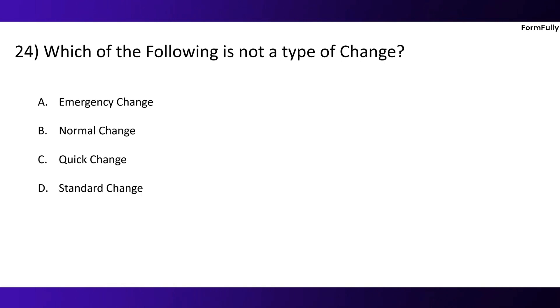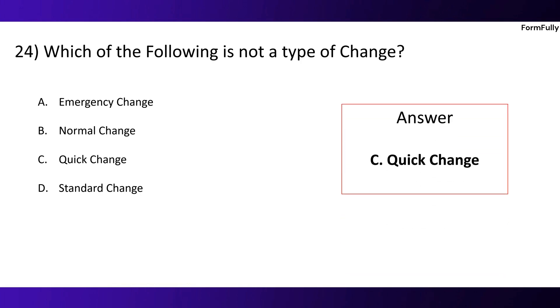Question 24. Which of the following is not a type of change? Option A: Emergency change. Option B: Normal change. Option C: Quick change. Option D: Standard change. The correct option is C, Quick change.